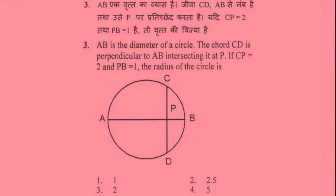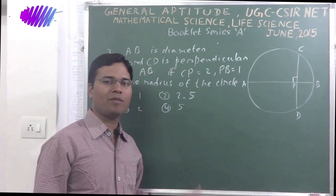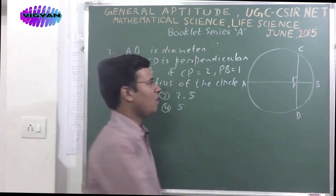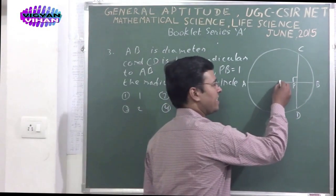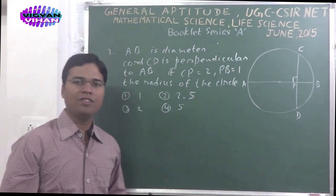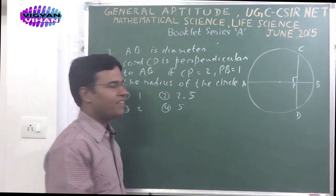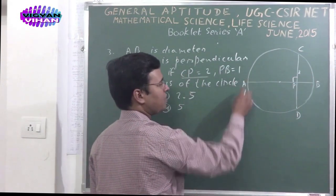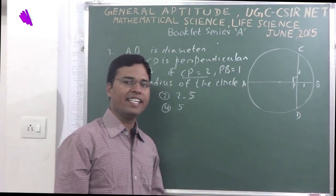The third problem: AB is the diameter of a circle. The chord CD is perpendicular to AB, intersecting it at P. If CP is equal to 2 and PB is equal to 1, the radius of the circle is. There are 4 options: option 1, 1; option 2, 2.5; option 3, 2; option 4, 5. Friends, the next problem is problem number 3. In this problem, there is a given diagram of a circle. Line segment AB is diameter of this circle and chord CD intersects this diameter at point P. Then we will have to calculate the radius of this circle. It is given line segment CP is 2, from P to C it is 2, and PB is 1, P to B it is 1. We will have to calculate the radius. There are 4 options.